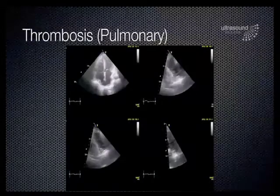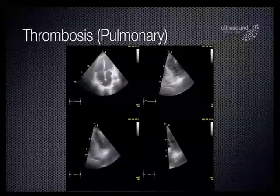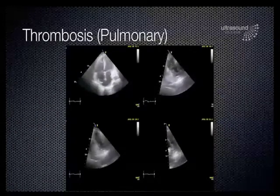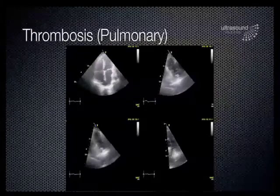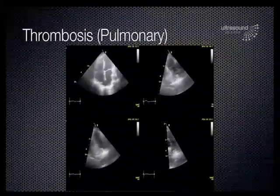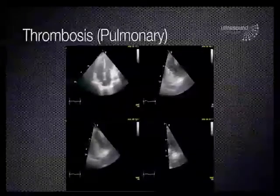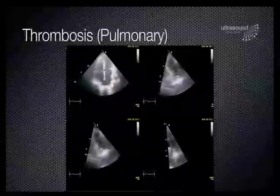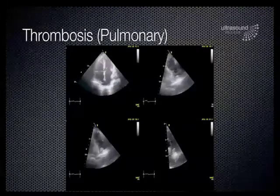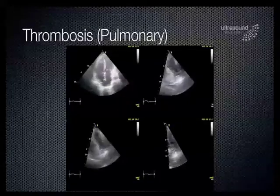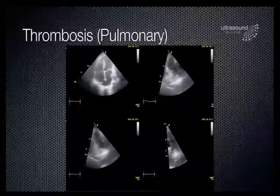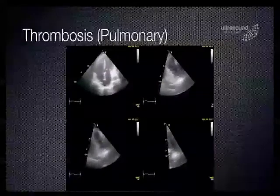In this 4-up display, one can see a dilated right ventricle — the same size if not slightly bigger than the left ventricle in the apical four-chamber view — and there's the impression of something flicking in the right atrium. The views at the right top and left bottom are of the pulmonary artery and its bifurcation, showing a mobile clot at the bifurcation.